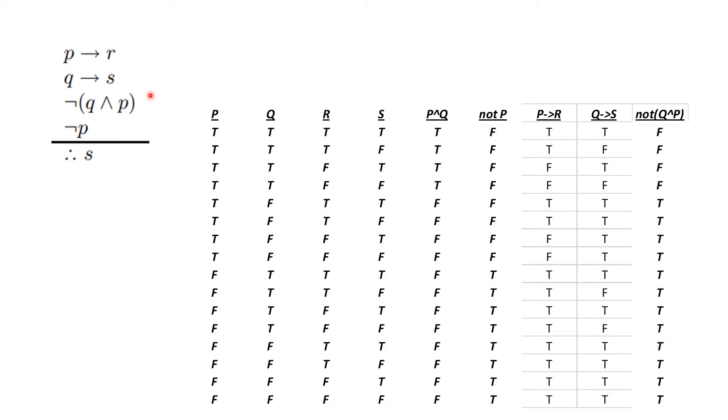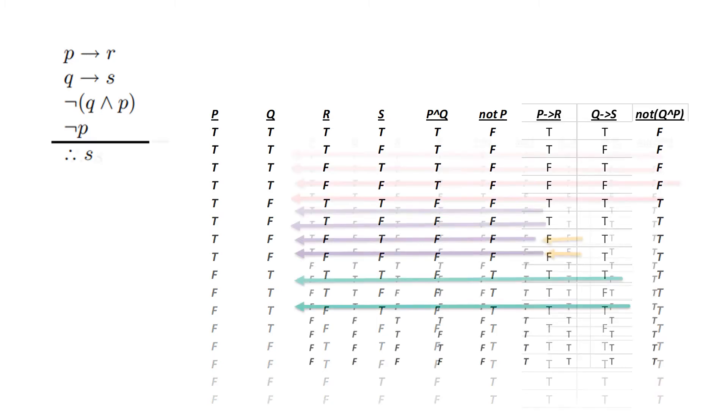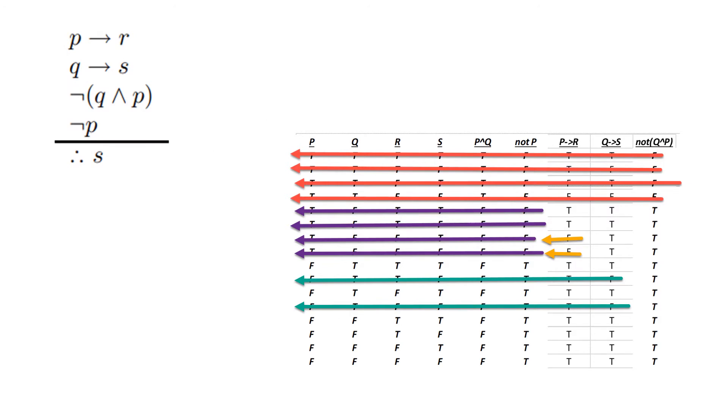So what we're going to do is form these statements so that we can cross things out. And we're going to force what is above the line to be true and see if we're forcing what is below the line to be true. So we cross all these things out, and notice that when I look at S, that S can be true or false, meaning that this is not a valid argument.